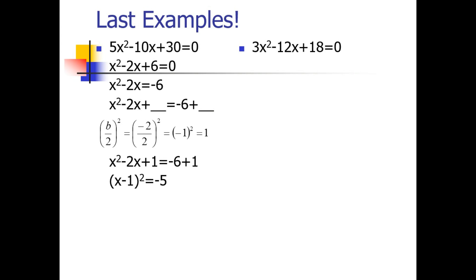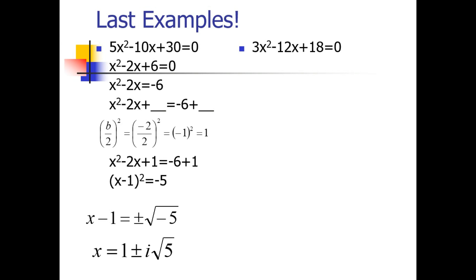We take the square root of both sides, giving us x minus 1 equals plus or minus the square root of negative 5. Since the radical expression is negative, we use the imaginary number i. Transposing negative 1 to the right side gives our final answer: 1 plus or minus i times the square root of 5. We cannot add our two terms because they are not like terms, so this is our final answer.